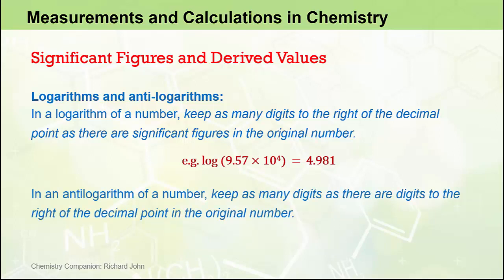When we take the anti-log of a number, the reverse is the case. We keep as many significant figures in the result as there are digits to the right of the decimal point in the original number. So for example, taking the anti-log of 12.5, we note there is only one digit to the right of the decimal place, so our end answer has only one significant figure in it: 3 × 10¹².